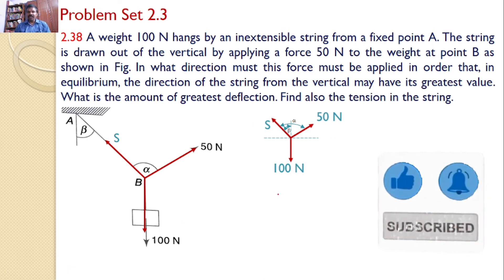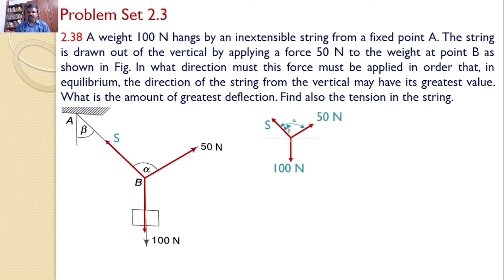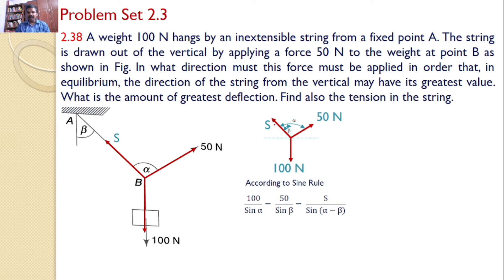By observing this free body diagram we can see all three forces are concurrent, because all three forces are meeting at a particular point and are divergent. So we can apply the sine rule. According to the sine rule, the 100 newton force divided by the sine of the angle between the other two forces — that is S and 50 newtons — which is alpha, so we can say it is 100 divided by sine alpha, equal to 50 divided by the angle between S and 100 newtons.